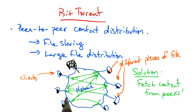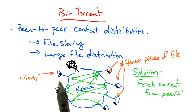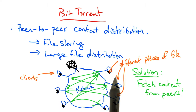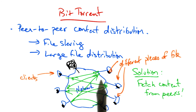The idea is that each peer is assembling the file, but it's assembling it by picking up different pieces of the file. And then it can retrieve the pieces that it doesn't have from the remaining peers in the network.